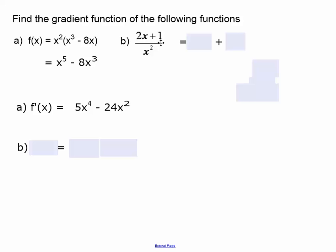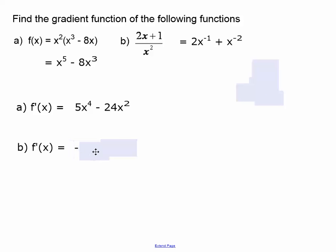For question B, we again simplify the fraction first into component terms. The first term, 2x over x squared, becomes 2x to the power minus 1. Then 1 over x squared becomes plus x to the power minus 2. Differentiating: minus 1 times 2 is minus 2, giving minus 2x to the power minus 2. And the second term gives minus 2x to the power minus 3.